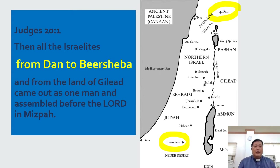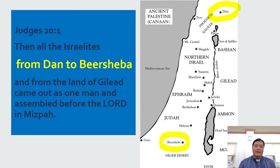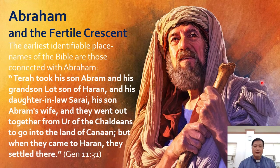In Judges 21, we read: 'Then all the Israelites from Dan to Beersheba, and from the land of Gilead, come out as one man, and assemble before the Lord in Mizpah.' So that's how they view the land. Where are the boundaries? When they say from the north to the south, it's from Dan to Beersheba.